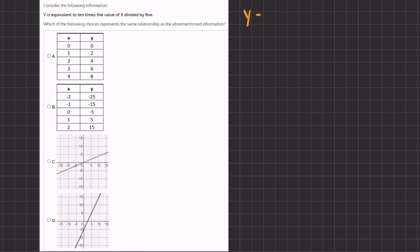y is equivalent to 10 times the value of x, 10x, divided by 5. This is our statement in mathematical terms, and if we simplify this, we have y equals 2x. Now let's see which one of our following answers represents y equals 2x the best.